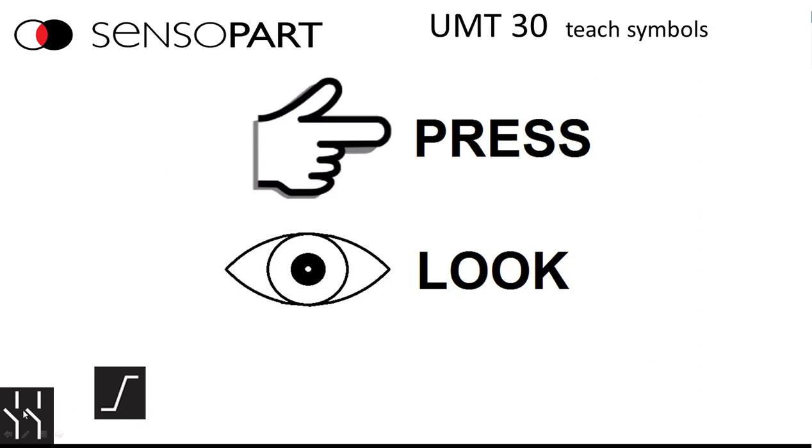And here in the lower left corner, you can see we've got this symbol for two discrete output versions and the symbol for the analog output version.